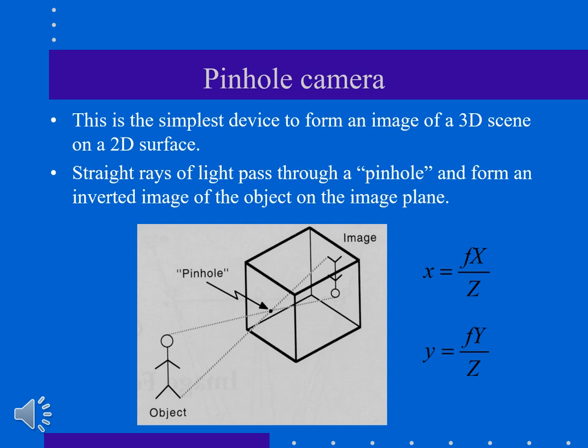Remember the pinhole camera. This is the simplest device to form an image of a three-dimensional scene on a two-dimensional surface. A box with an opening where light passes through that hole, and then you will have the image flipped on the back of that box.